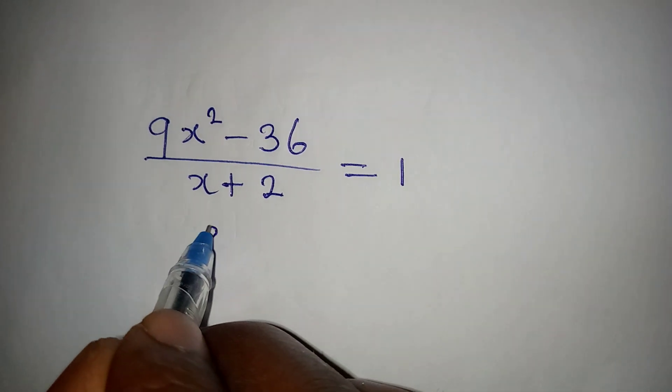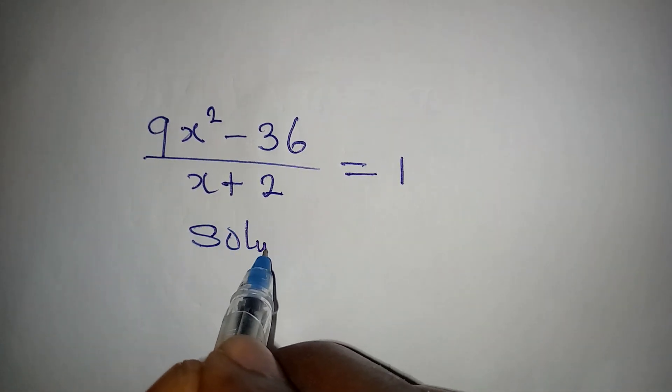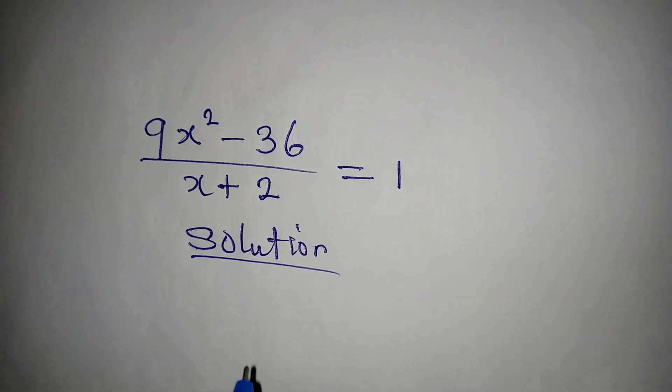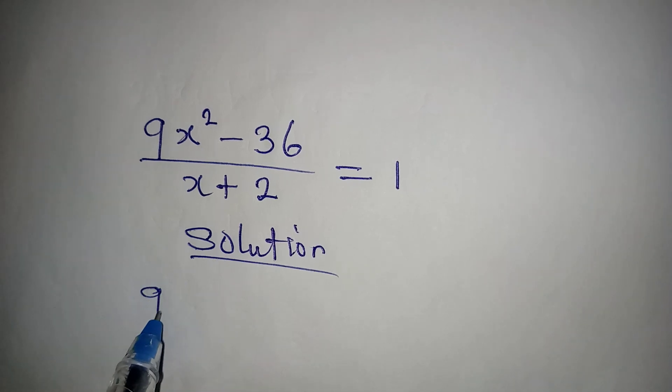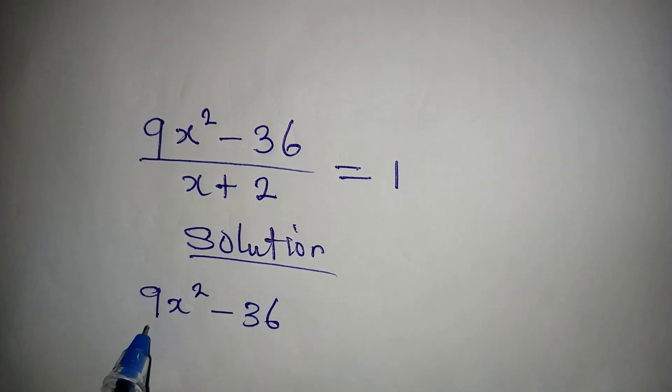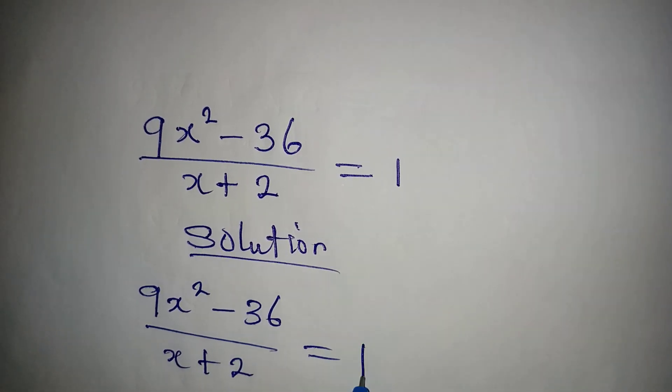Hello everyone, let's provide a quick solution to this problem. We have 9x squared minus 36 over x plus 2 equal to 1.